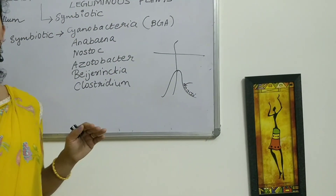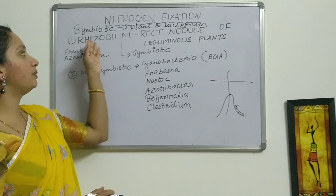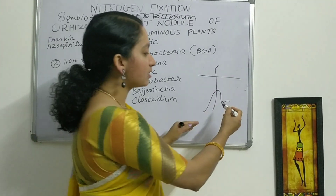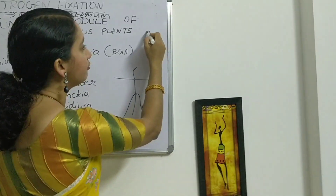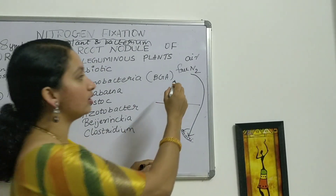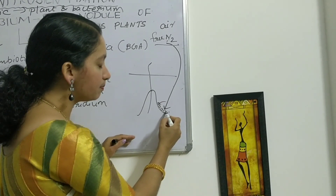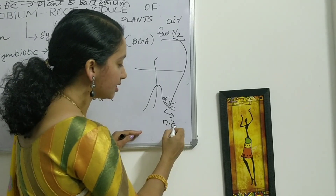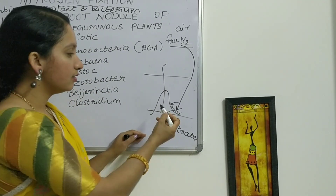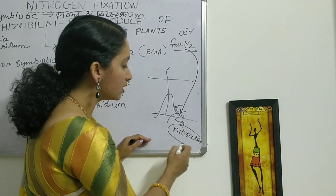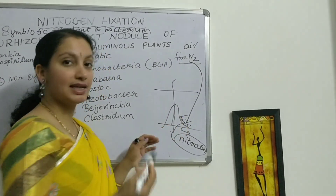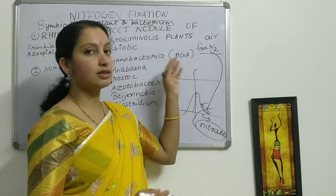Inside the root nodule structure, a type of bacterium resides that is called Rhizobium. This Rhizobium forms a symbiotic association with leguminous plants, where the bacterium takes nitrogen from the atmosphere and fixes this free nitrogen, forming nitrates. These nitrates mix in the soil, and when the plant is absorbing water, these nitrates dissolved in that water are taken up by the xylem conducting tissues, so the plant gets its nitrogen supplement.